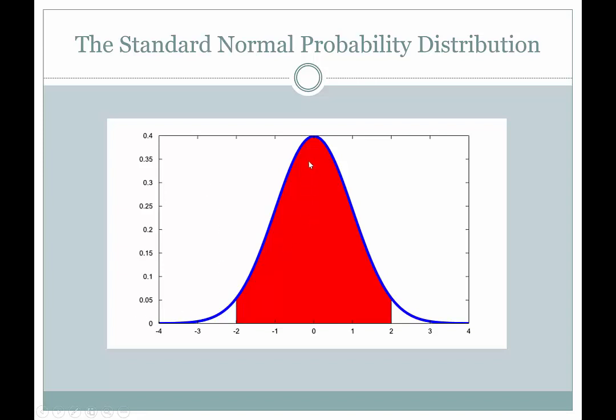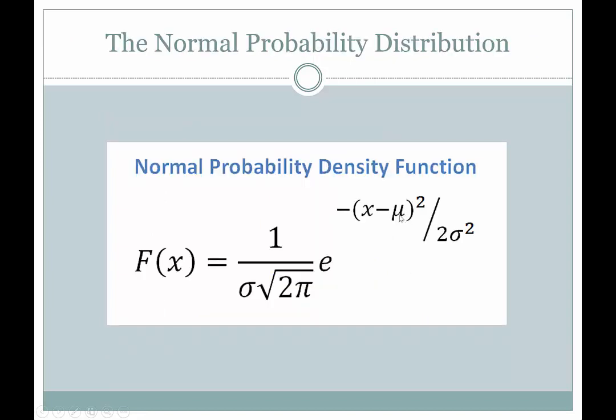One thing to also keep in mind is that the total area under any one of these probability distributions, regardless of what type, if it's a continuous probability distribution, the total area underneath it is going to be one.